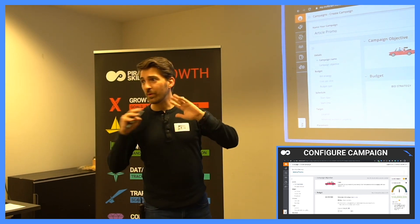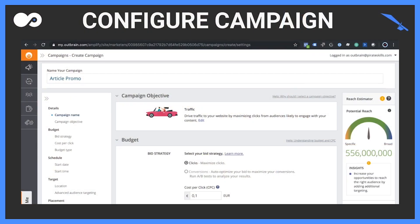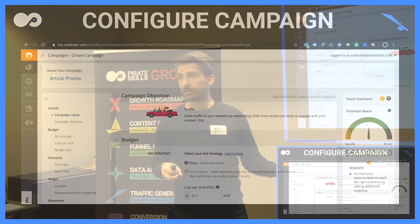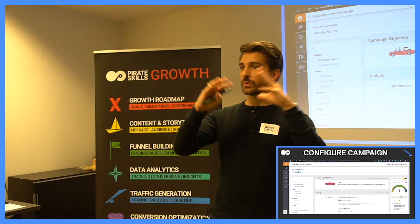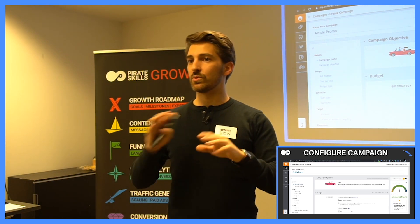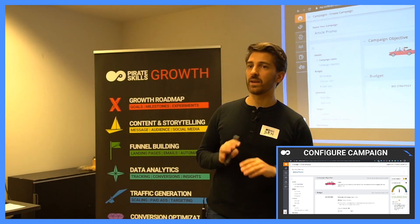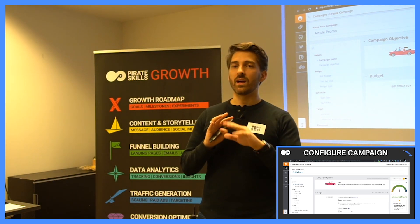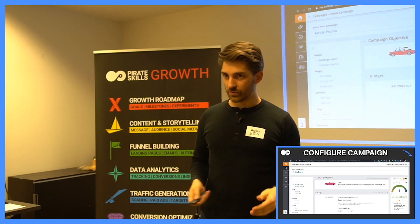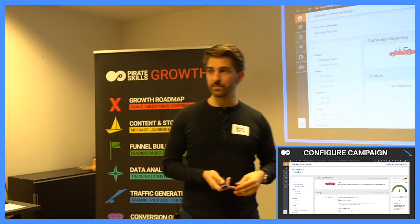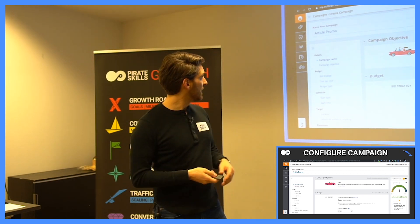With a basic traffic campaign and nothing else set up, you can already see that the potential reach is 556 million people — that is ridiculously large. You can narrow it down to one to two million and you'll be fine, but Outbrain can also work with larger audiences, just like Facebook, if you do conversion tracking.